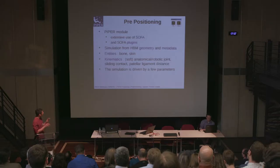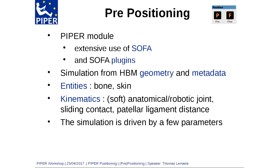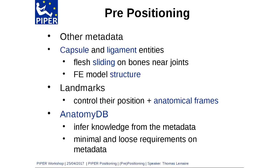In the Piper application there are several modules. The first is prepositioning, the most interactive one. We build the simulation from the geometry of your HBM and the metadata discussed this morning — specifically the bones and skin. The kinematics are built from anatomical or robotic joints, and we also include sliding contacts and patellar ligament distance constraints. The simulation is driven by a few parameters. Other metadata includes capsule and ligament entities.